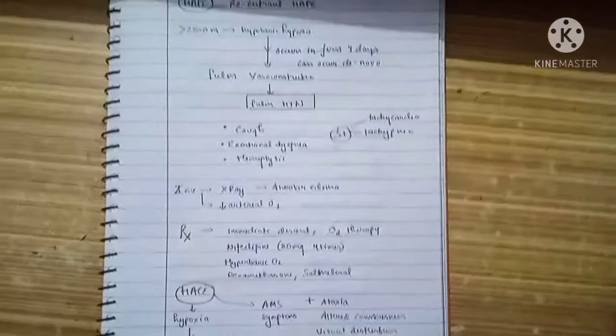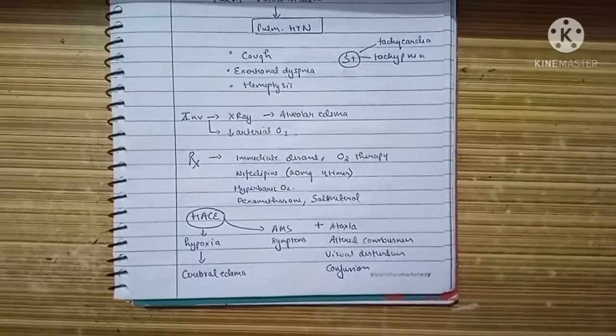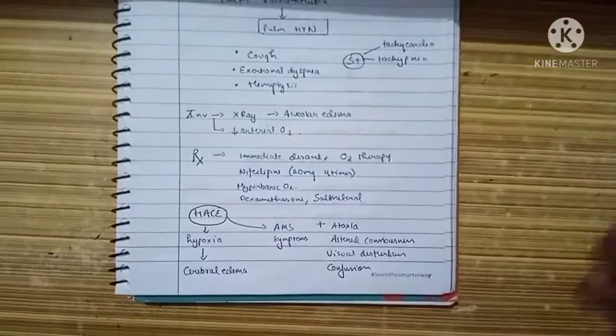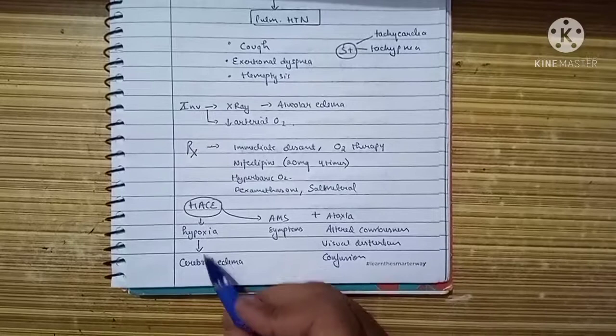Let's move to the next condition: HACE, High Altitude Cerebral Edema. Hypoxia leads to vasodilation everywhere except pulmonary vasculature. In cerebral vasculature, hypoxia leads to vasodilation, which causes cerebral edema. The symptom complexes seen here are because of cerebral edema.